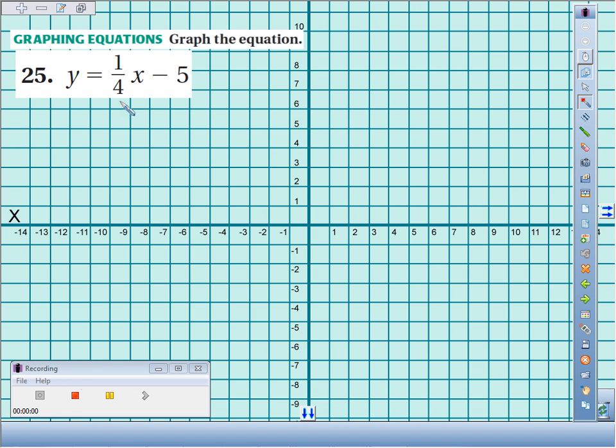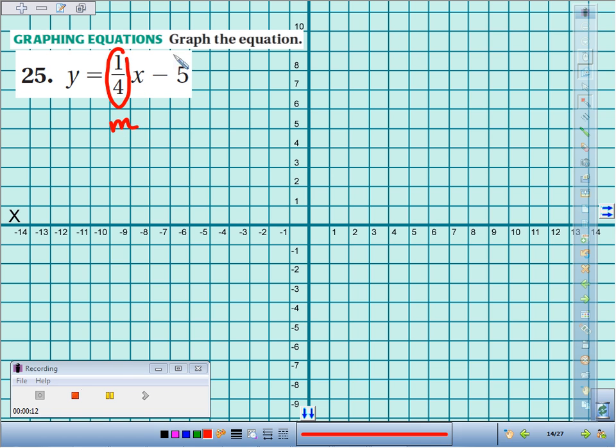For problem 25, we're supposed to graph the equation y equals one-fourth x minus 5. The nice thing is it's in slope-intercept form. We have y by itself already. We can recognize that the number in front of x is always our slope, so one-fourth is our slope, and the number by itself, negative 5, that's our y-intercept.